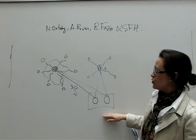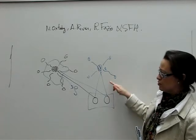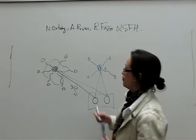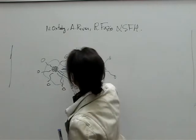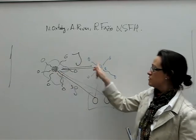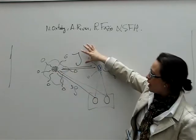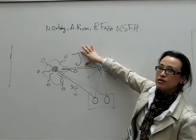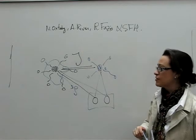What we would like to do is to be able to discriminate a situation like this from a situation like that, where our ancillary systems coupled themselves coherently with some strength capital J.